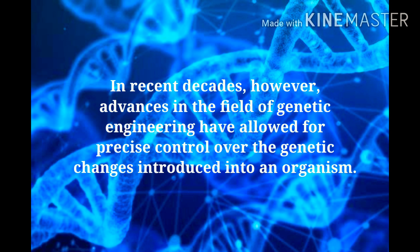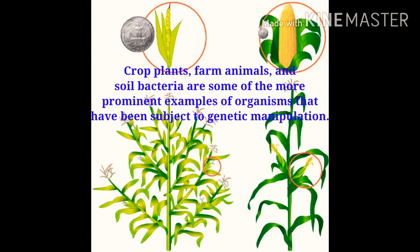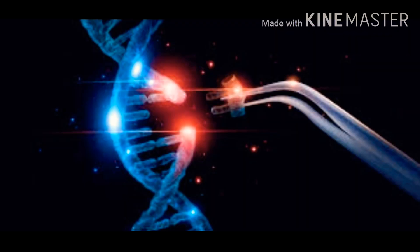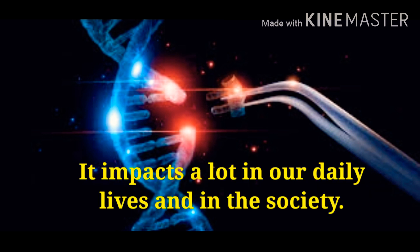In recent decades, advances in the field of genetic engineering have allowed for precise control over the genetic changes introduced into an organism. Crop plants, farm animals, and soil bacteria are some of the more prominent examples of organisms that have been subject to genetic manipulation, which impacts a lot in our daily lives and in society.